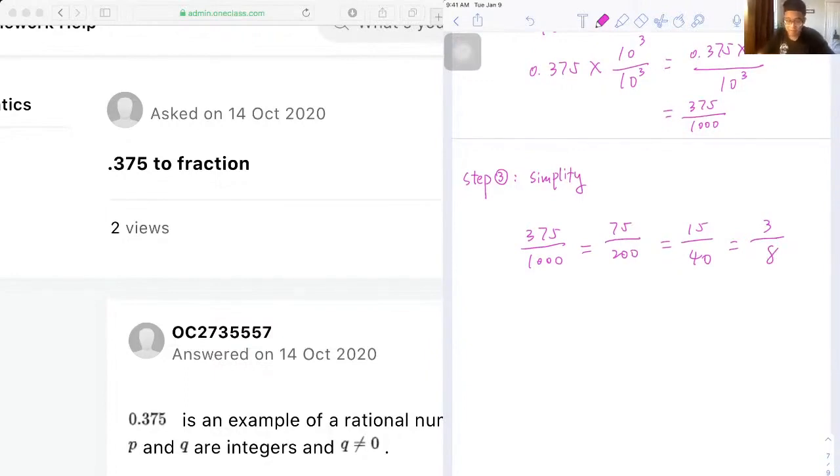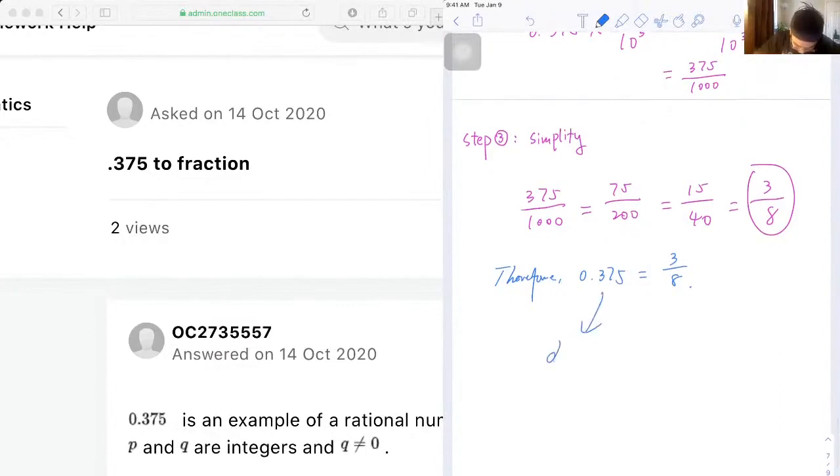So 3 over 8, okay. So first let's write down the conclusion. Therefore, 0.375 is equal to 3 over 8. Mm-hmm, and that is in the fraction form.